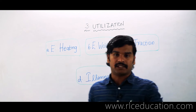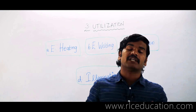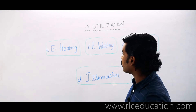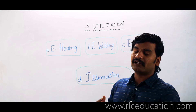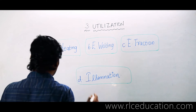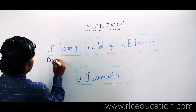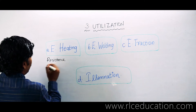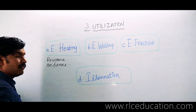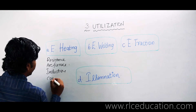In the electric heating topic we will study the advantages of electrical heating and the different types of furnaces used for generating heat for industrial applications. Electric furnaces are of two general types. There are different heating techniques: resistance furnaces, arc furnaces, induction heating techniques, and capacitive heating techniques.